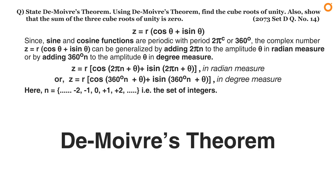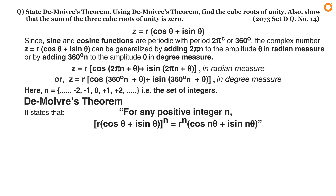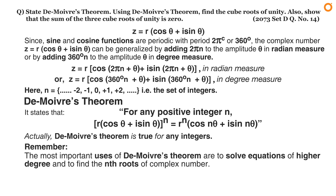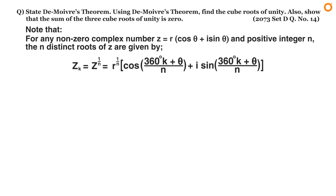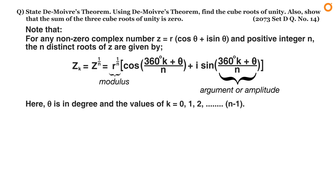Now let's state De Moivre's theorem. It states that for any positive integer n: r times (cos theta plus i sin theta) to the power n equals r to the power n times (cos nθ plus i sin nθ). De Moivre's theorem is actually true for any integer. Its most important uses are to solve equations of higher degree and to find the nth root of a complex number. For any non-zero complex number z equals r times (cos theta plus i sin theta) and positive integer n, the n distinct roots of z are given by r to the power (1/n) as the modulus and (360k plus theta) divided by n as the argument, where theta is in degrees and k ranges from 0 to n minus 1.